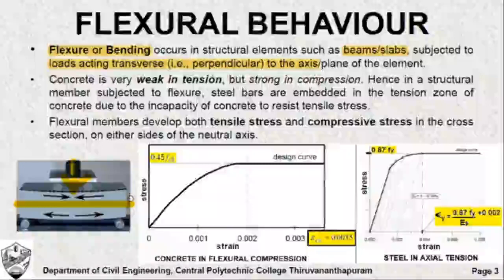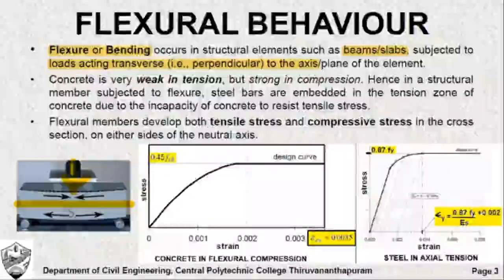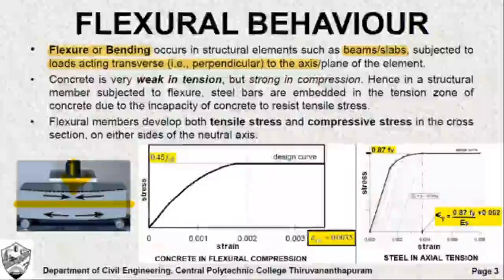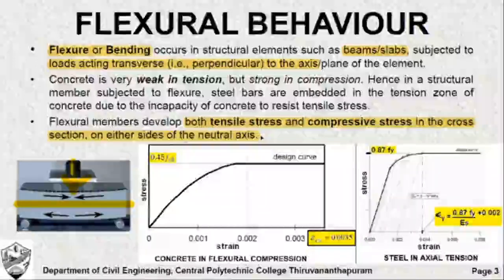When the beam bends, the beam fibers above the neutral axis tend to come closer to each other and they experience compressive stress. The fibers below the neutral axis tend to move away from each other and they experience tensile stress. So the same structural member develops both tensile stress as well as compressive stress in the cross section on either side of the neutral axis.